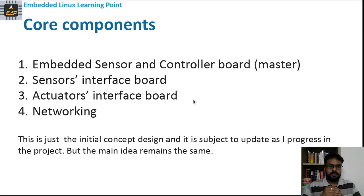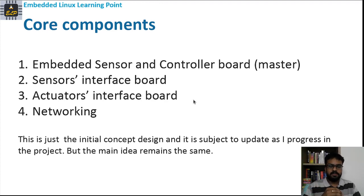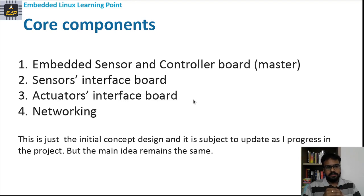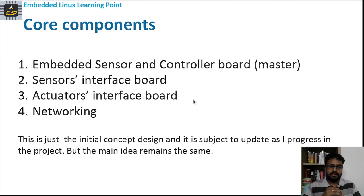The second part is the sensors interface board, which deals with how we interface different sensors to the main board. One way to interface sensors is to have some circuit that can directly connect to the analog pins of the master board. The other way is via networking called the wireless sensor network that we will explore in this project. The third component is the actuators interface board. Similar to sensors, we can connect the actuators to the IO pins of the master board, and also use the sensor network to have the actuators connected via a data board, which connects to the master board via network.